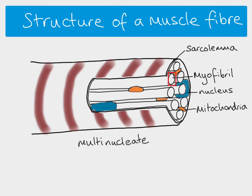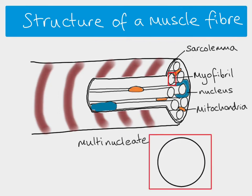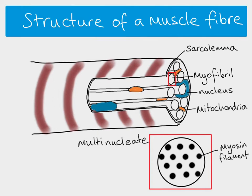Looking at a transverse cross-section of a myofibril, we can see the protein filaments inside. There are thick filaments, which are myosin, and thin filaments, which are actin. The myofibril is made of those two protein filaments in a particular arrangement.